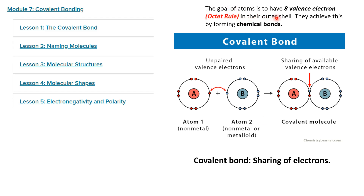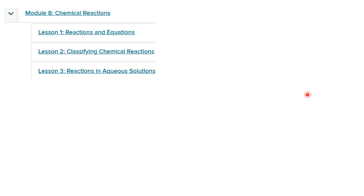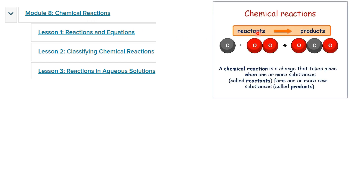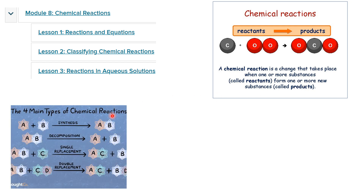Again, this was all so that atoms can achieve the octet rule — eight valence electrons. If you count how many valence electrons are around atom A: two, four, six, and eight; and B: two, four, six, and eight — so now they are happy. That's why they form this covalent bond. And then in term 2 we studied chemical reactions and balancing chemical equations. We have reactants and products — a chemical reaction is a change that happens when one or more substances form one or more new substances.